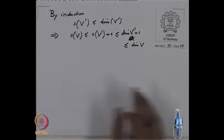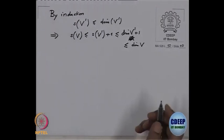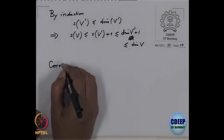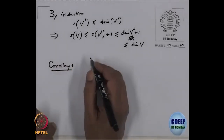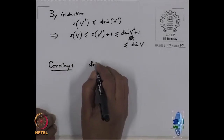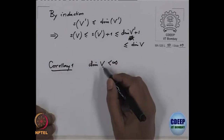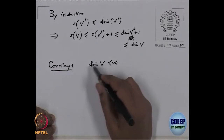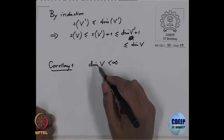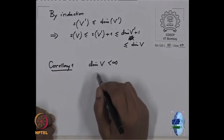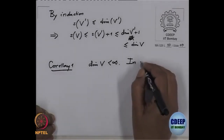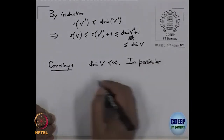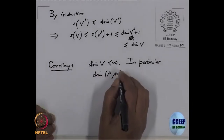Now I will deduce a few consequences. Corollary one: the dimension of the module is finite. Our assumption is that V is a finitely generated module over a Noetherian local ring. We have proved that this dimension is the same as the degree of the Hilbert-Samuel polynomial, and the degree is always finite. In particular, the dimension of a local ring is finite.